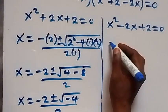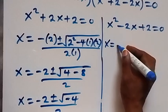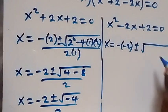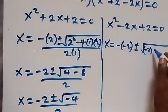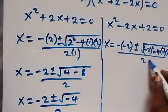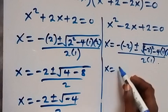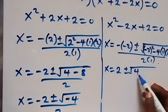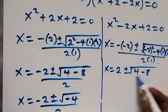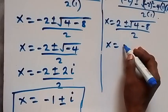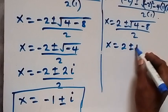Now solving the second equation x² − 2x + 2 = 0 using the quadratic formula: x equals minus(−2), that is plus 2, plus or minus square root of (−2)² − 4·1·2, all over 2·1. That gives x = 2 ± square root of (4 − 8) = 2 ± square root of minus 4.